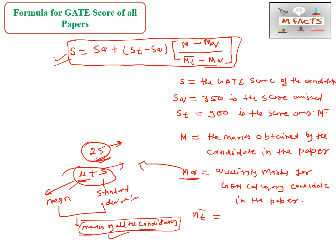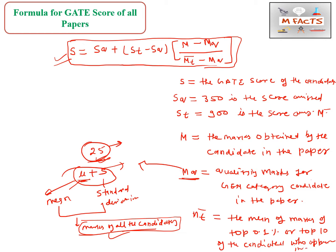The one remaining term is M̄t. This is the mean of the marks of the top 0.1 percent or top 10 candidates — whichever is larger — who appeared in the exam. So M̄t is the mean of the marks that students get out of 100 among the top 0.1 percentile or top 10 candidates.